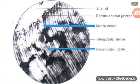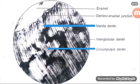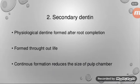You can see here the enamel-dentine junction. These are mantle dentine, and these are circumpulpal dentine and interglobular dentine. Now, secondary dentine — we discussed about primary dentine and its two types, and now secondary dentine.